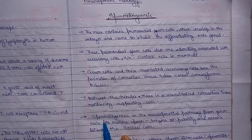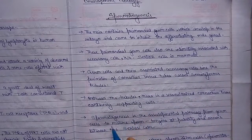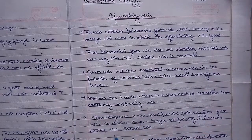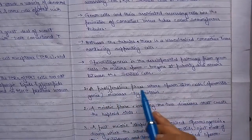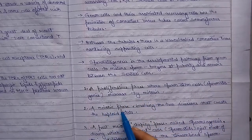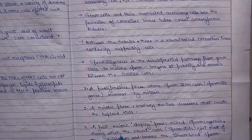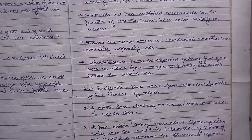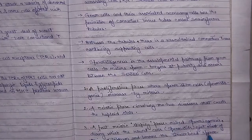Spermatogenesis is the development pathway from germ cells to mature sperm. It begins at puberty and occurs between the Sertoli cells. There is a proliferative phase where sperm stem cells, spermatogonia, increase by mitosis; a meiotic phase involving two divisions that create the haploid state; and a post-meiotic shaping phase called spermiogenesis, during which round cells called spermatids eject most of their cytoplasm and become the streamlined sperm.